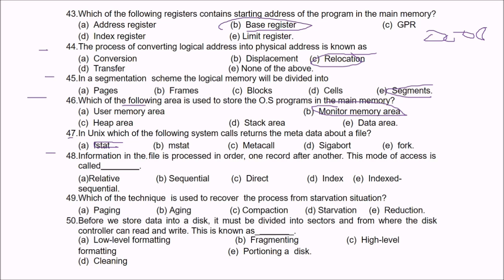Question 48: Information in the file is processed in order, one record after another. This mode of access is called Sequential access.